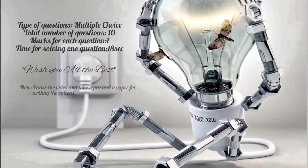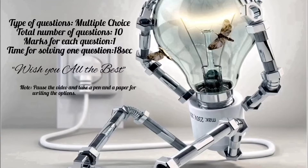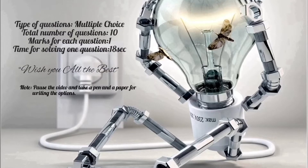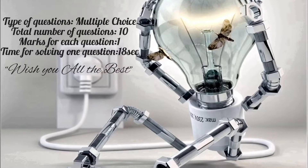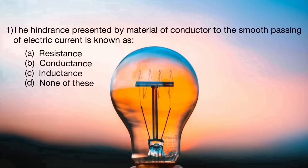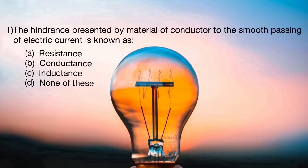Hello students, welcome to the self-assessment test. Please pause the video and take out a pen and paper for writing the options. Question number one: the hindrance presented by material of a conductor to the smooth passing of electric current is known as — A: resistance, B: conductance, C: inductance, D: none of these.